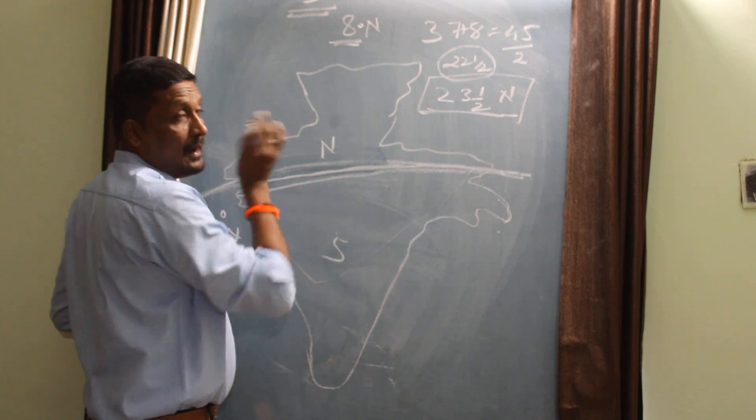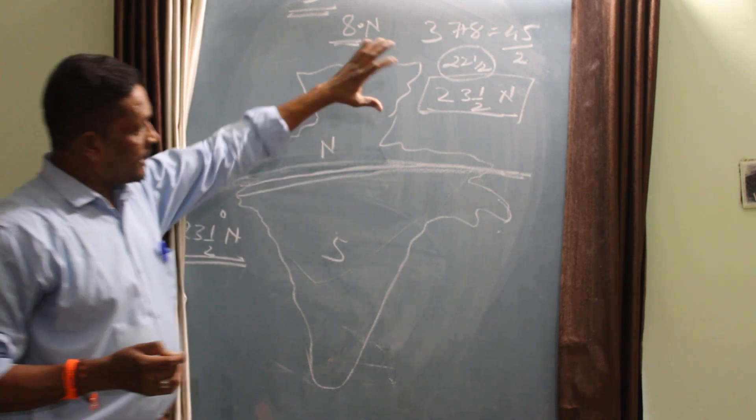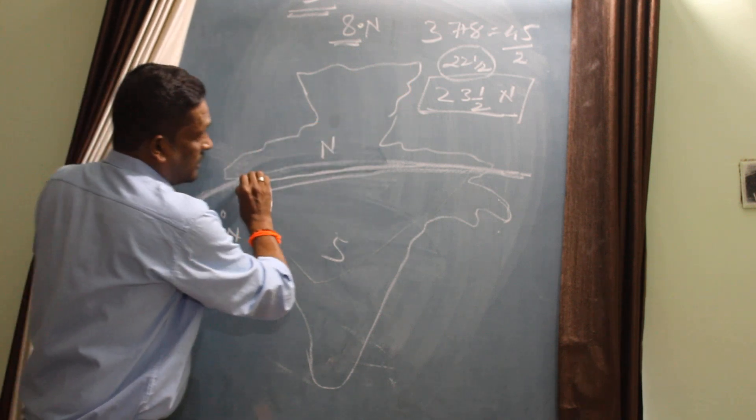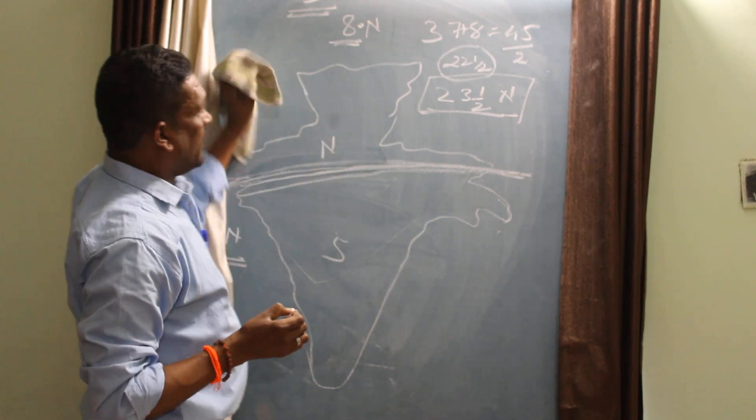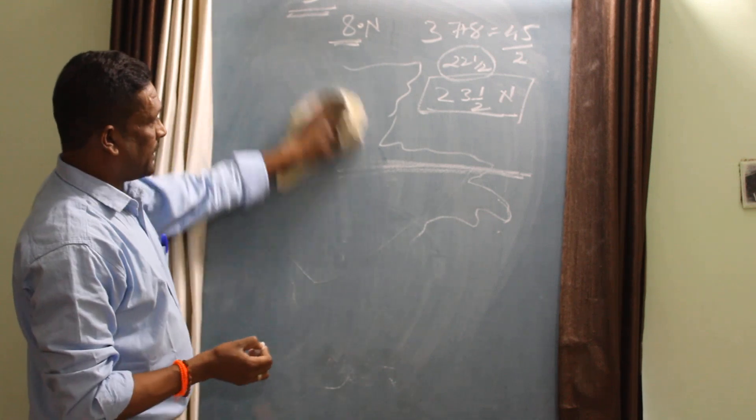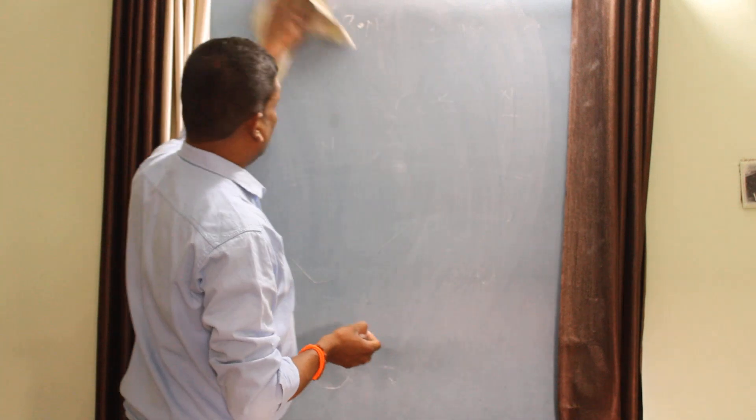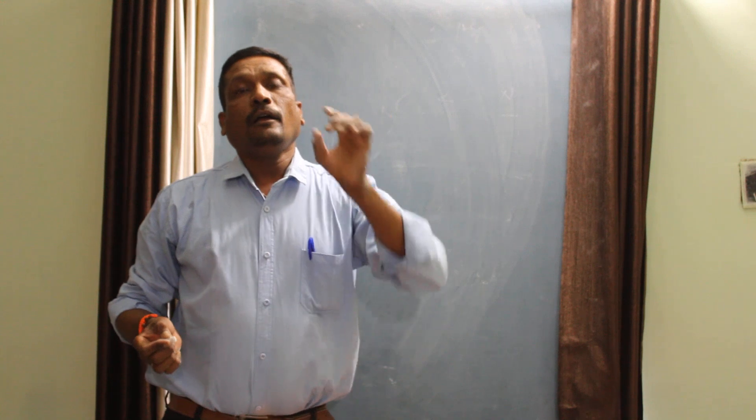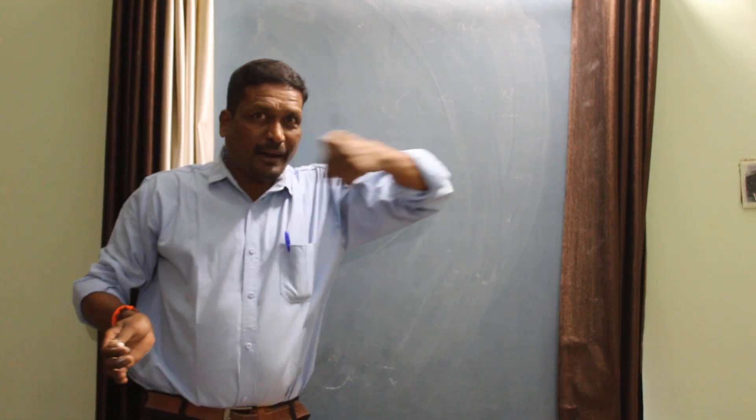Approximately India into two parts is called as Tropic of Cancer, which comes just from Gujarat to Arunachal Pradesh. The question here is we have to just go through the map of India and see the Tropic of Cancer and tell me the answer: name the states from which Tropic of Cancer passes.